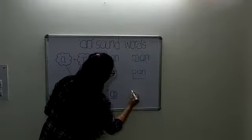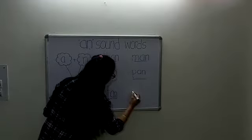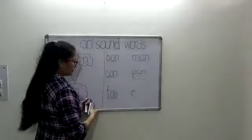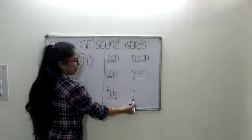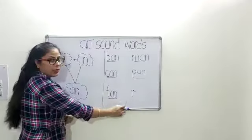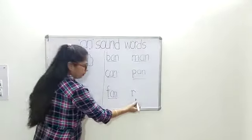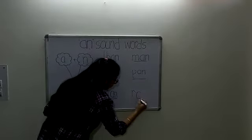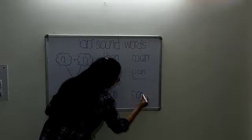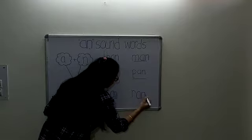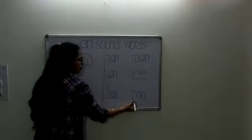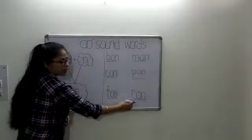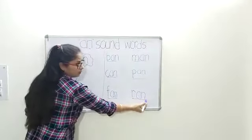The next letter is R. As we know, the phonetic sound of R is R. When we add the sound of AN into the phonetic sound of R, it becomes R and AN — it becomes RAN.